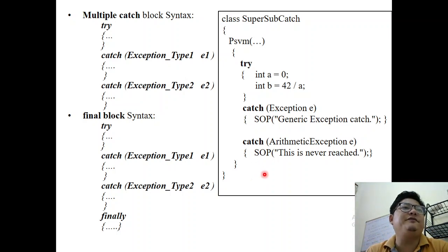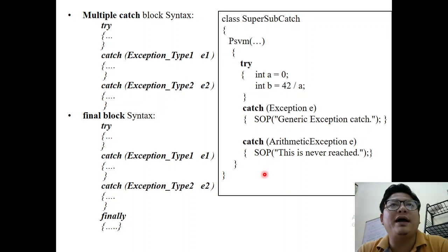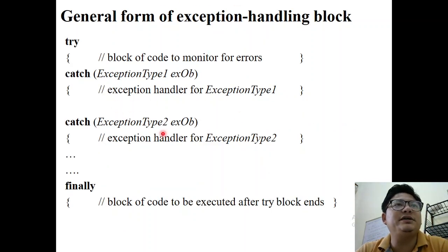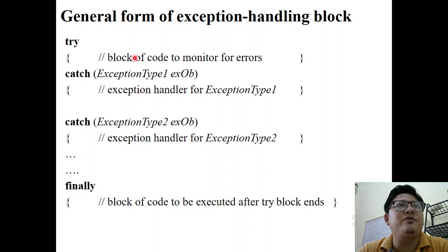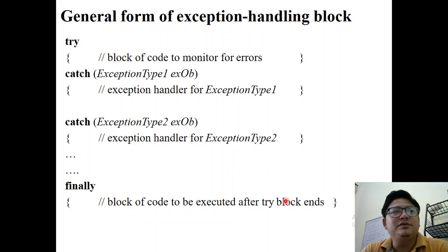The finally block is used when you want certain code to be executed mandatorily after the try block. In the syntax, you put the suspicious statement in the try block, list catch blocks, and put code that must always execute in the finally block — regardless of whether an exception occurred or not.